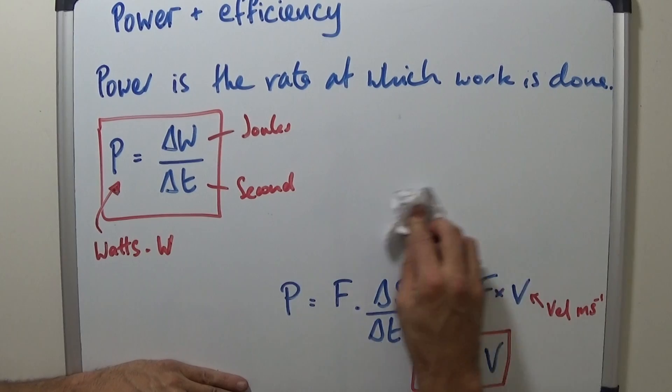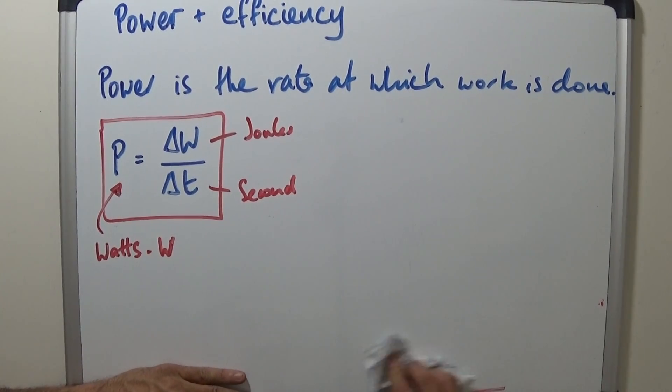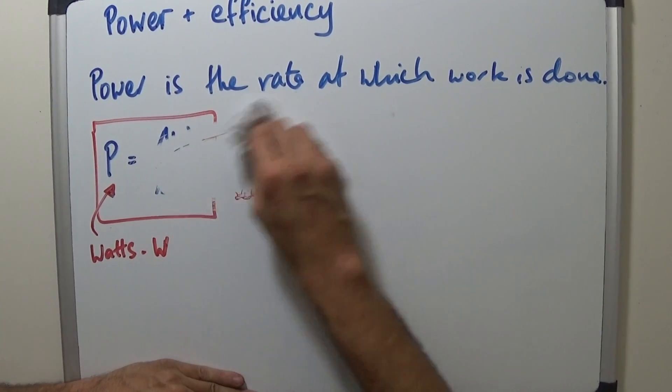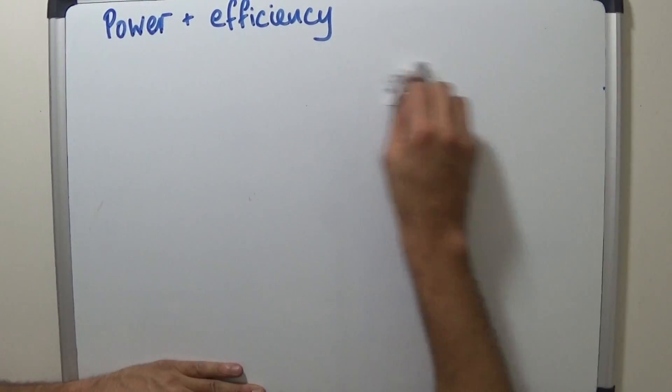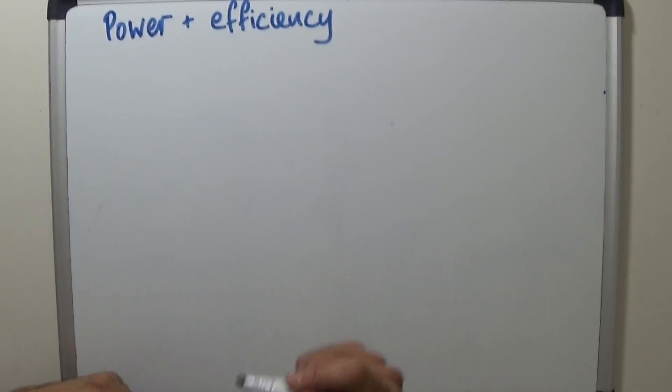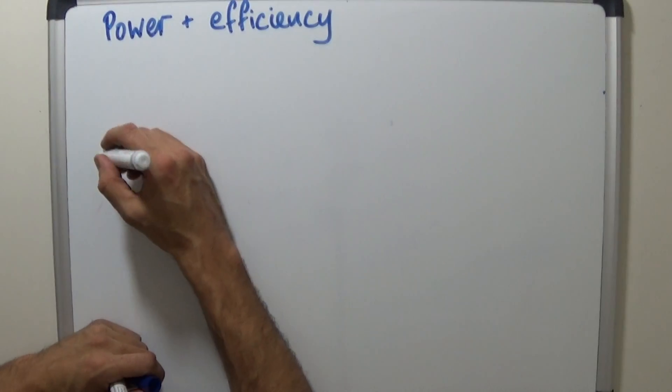And then the final thing is efficiency. Now, efficiency hasn't changed since GCSE. It's the one thing I'm pleased to report is basically exactly how you left it. And it is the ratio of useful energy output to total energy input. And it will always be that.